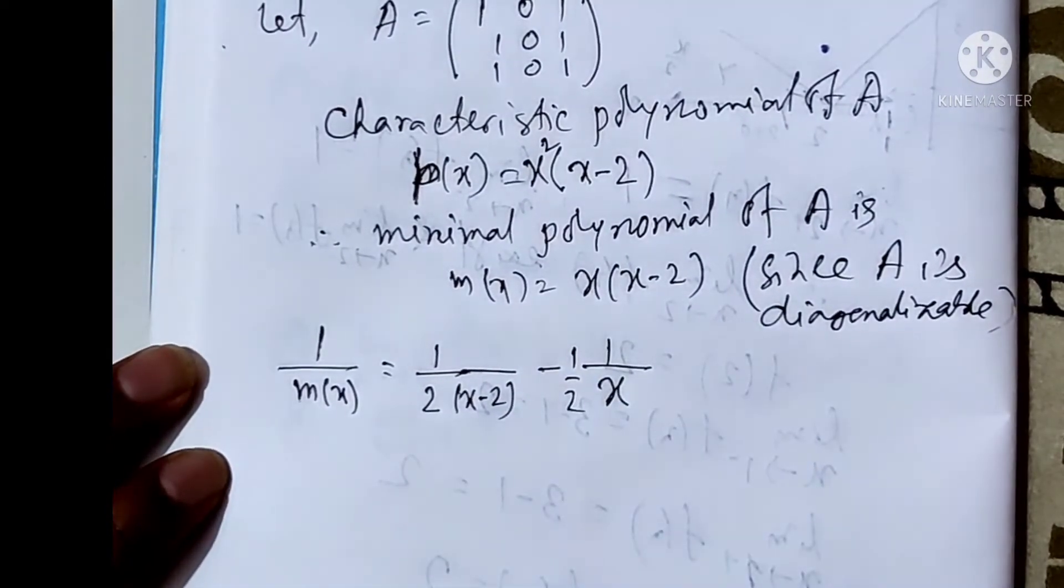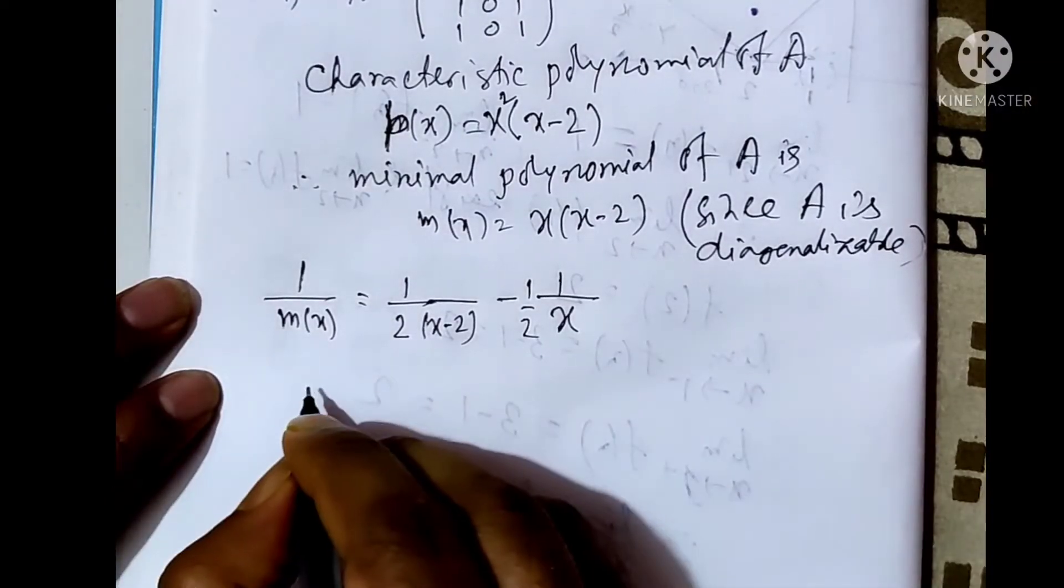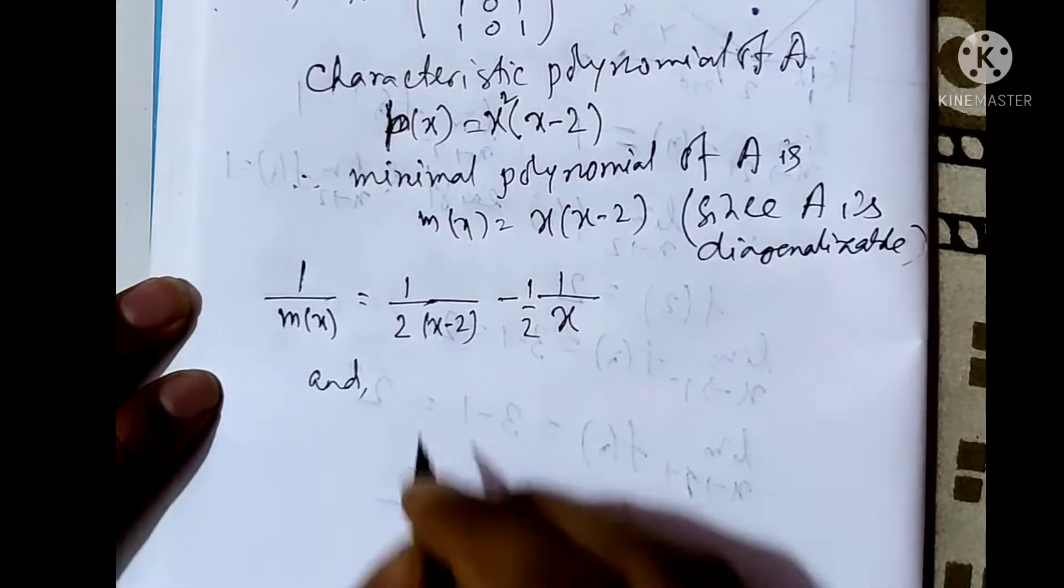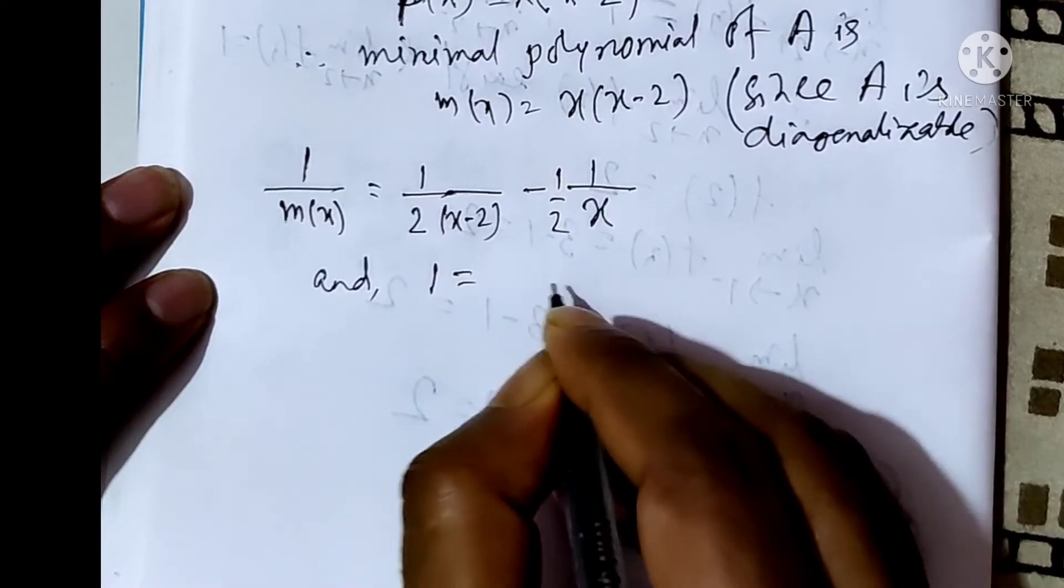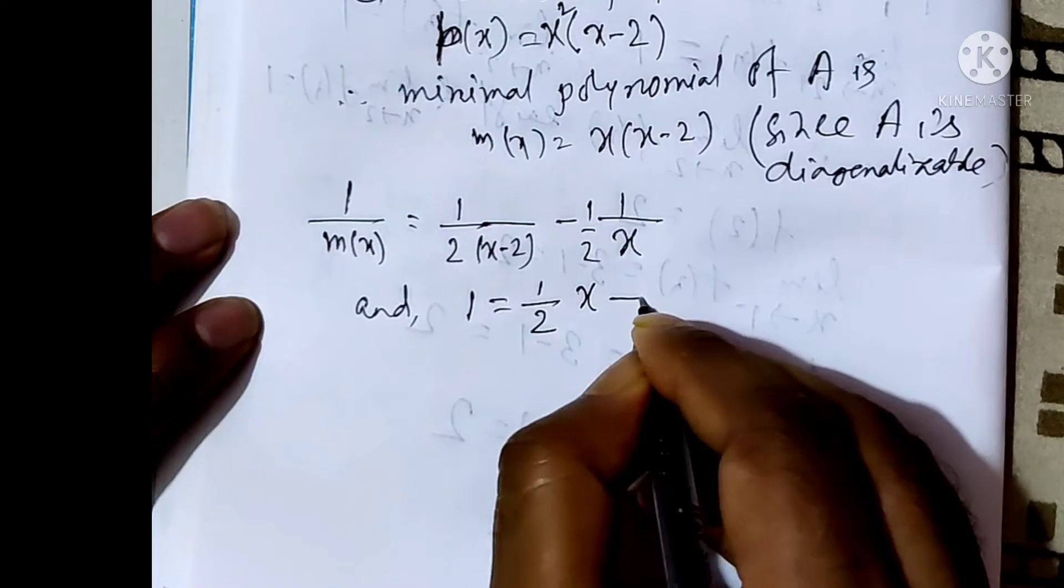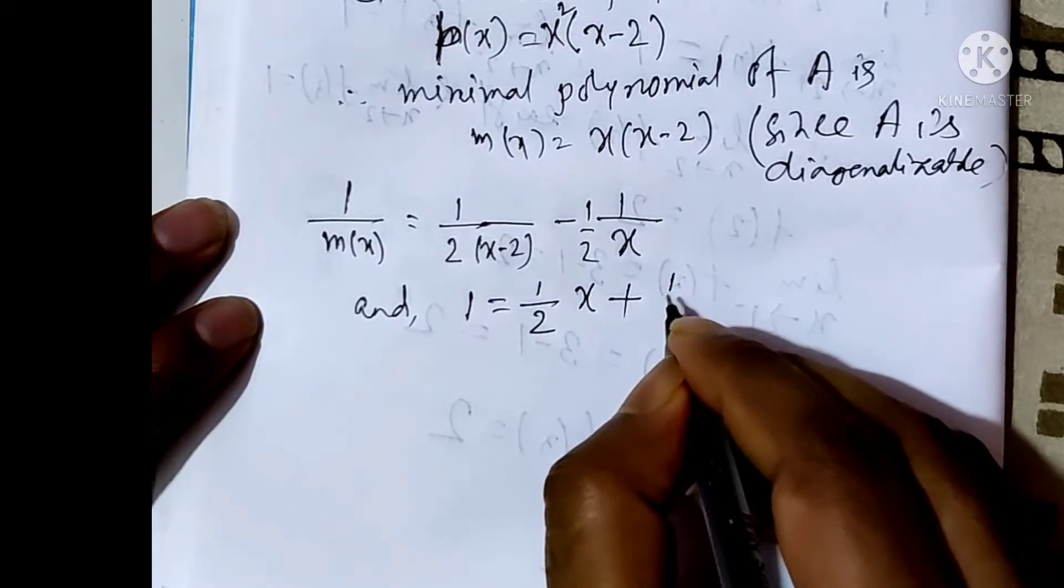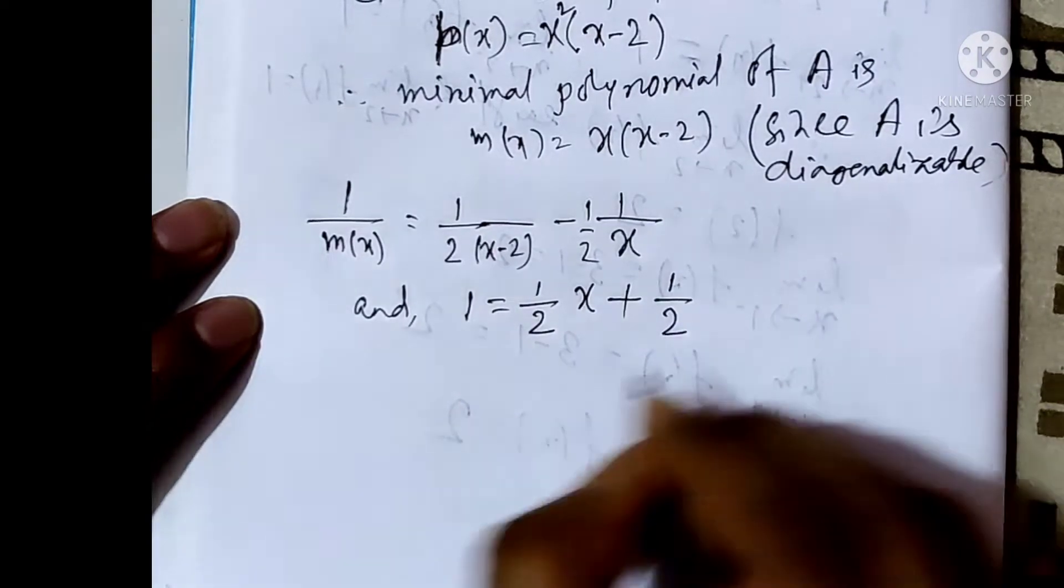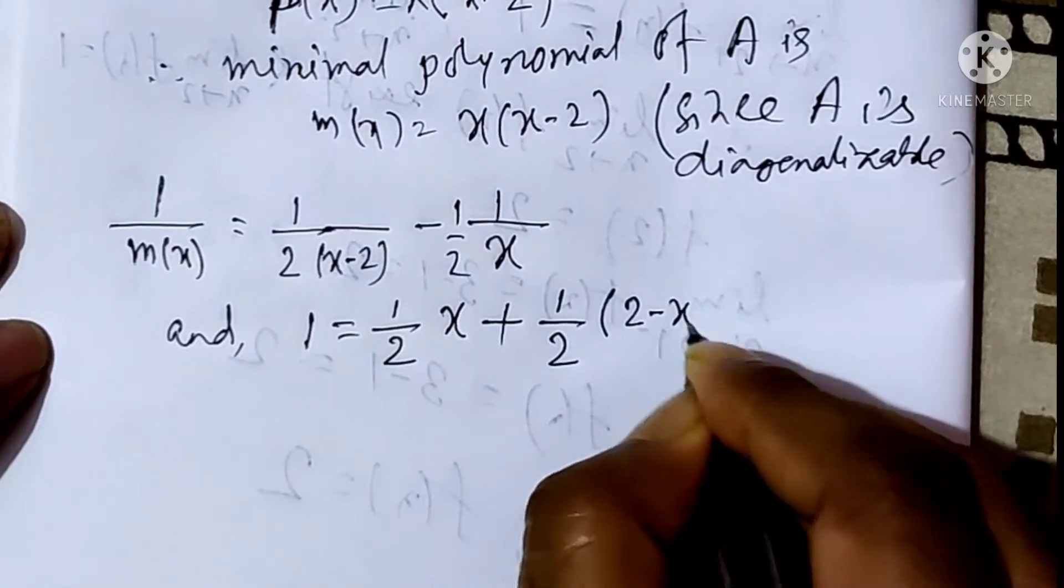And 1 equals 1/2 times x plus 1/2 times (2 minus x).